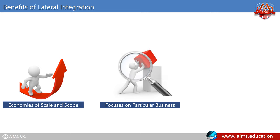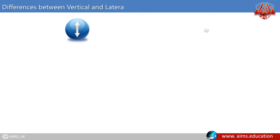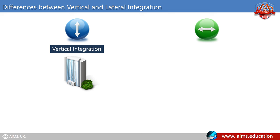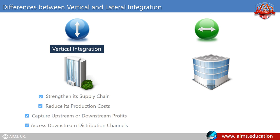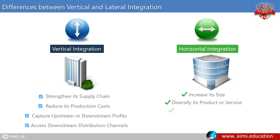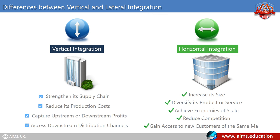Differences between vertical and lateral integration. When a company wishes to grow through vertical integration, it is seeking to strengthen its supply chain, reduce its production costs, capture upstream or downstream profits, or access downstream distribution channels. However, when a company wishes to grow through horizontal integration, it is seeking to increase its size, diversify its product or service, achieve economies of scale, reduce competition, or gain access to new customers of the same market.